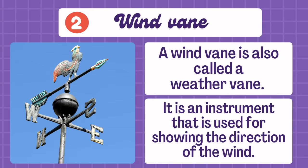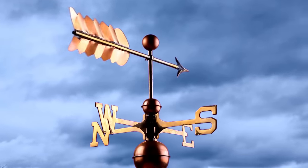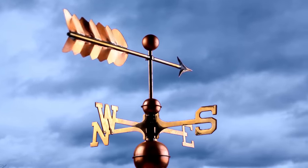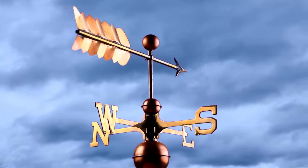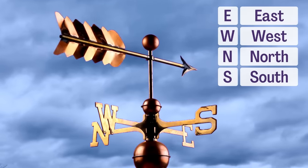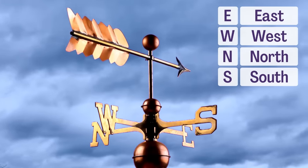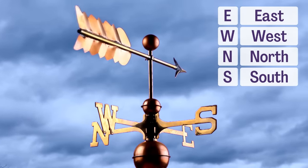Number two: wind vane. A wind vane is also called a weather vane. It is an instrument used for showing the direction of the wind. The four letters E, W, N, and S represent the four directions — East, West, North, and South.